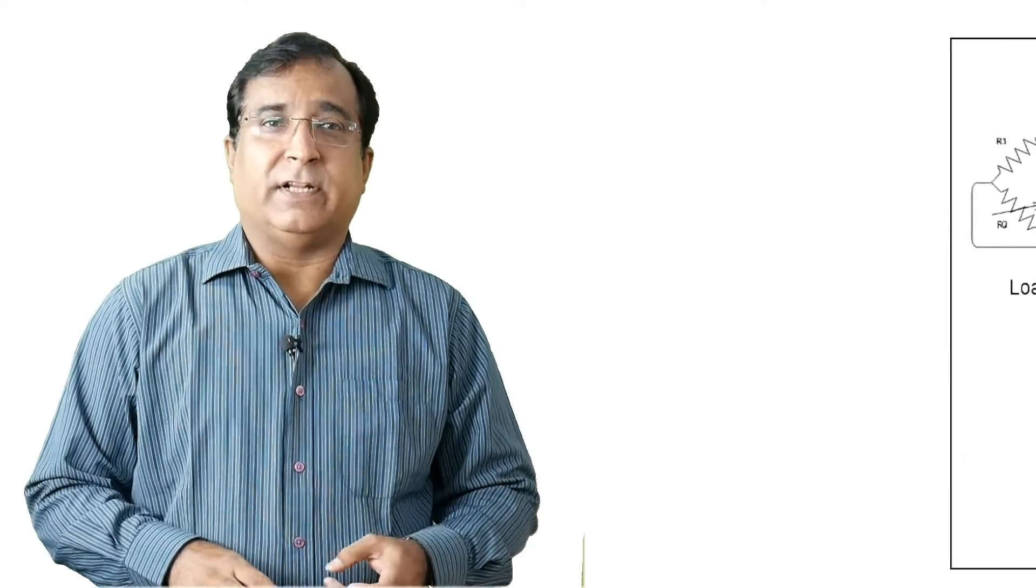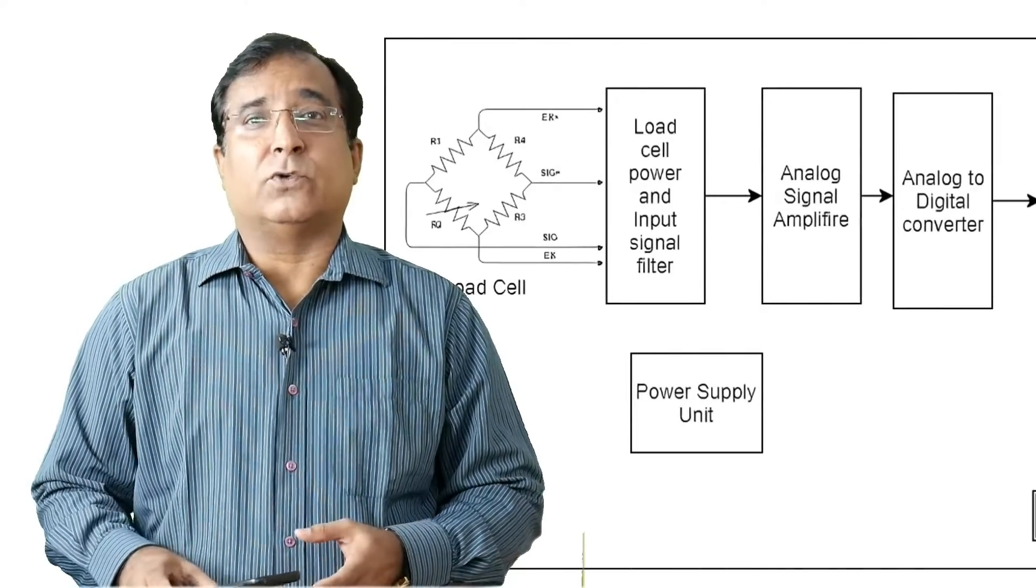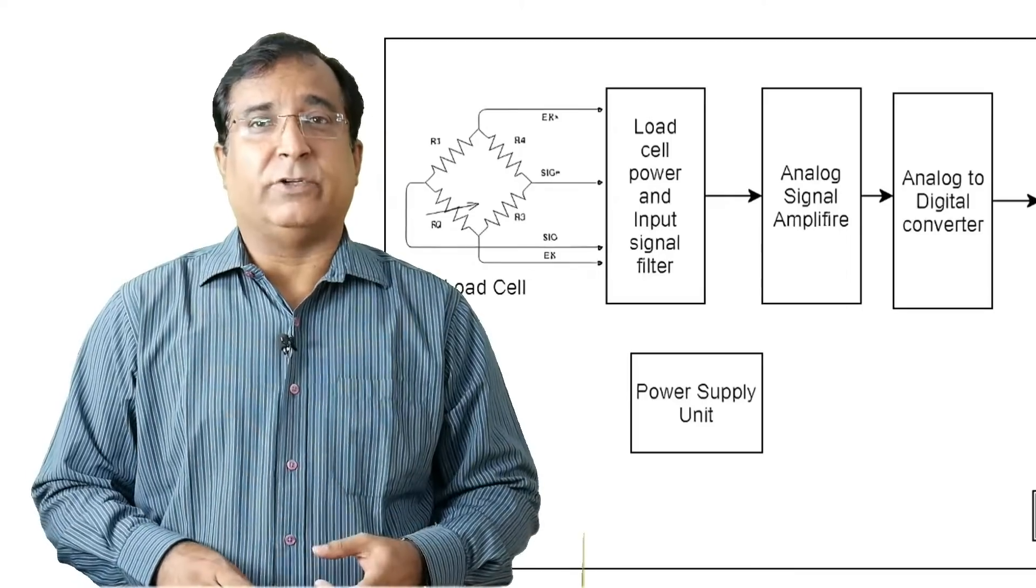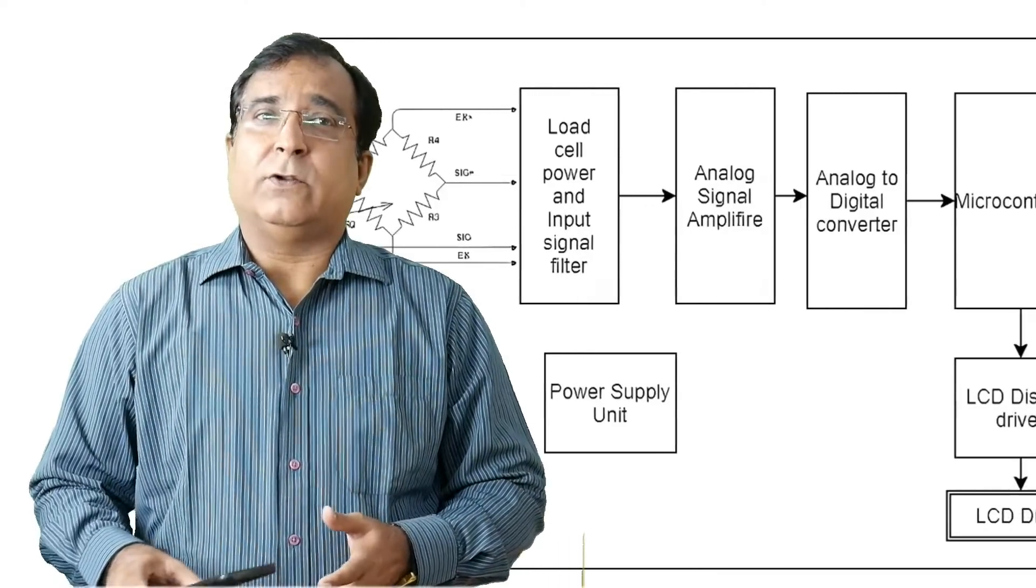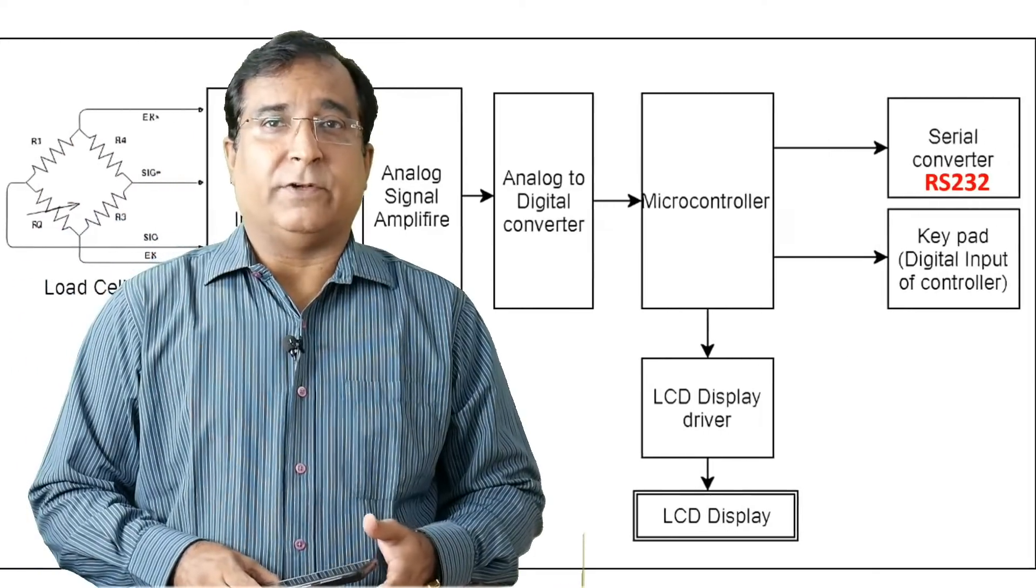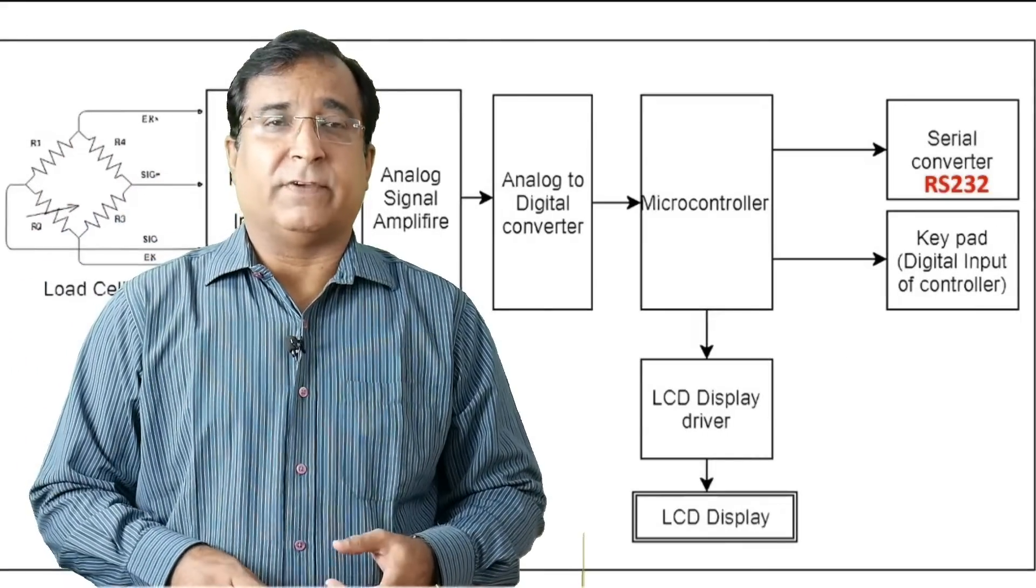The output received in terms of millivolt is converted into physical readings. Here the signal goes through various kind of operations like filtering, amplification, A to D conversion, and then signal goes to digital processing unit for tare and span calibration facility.